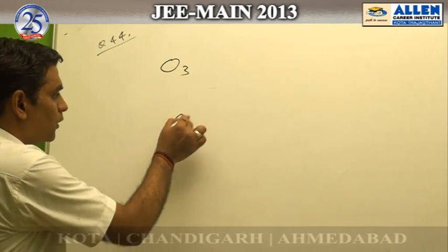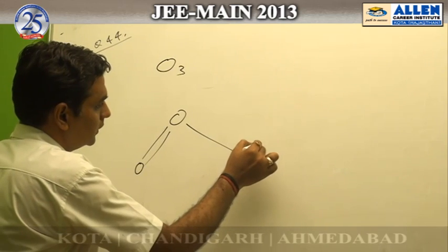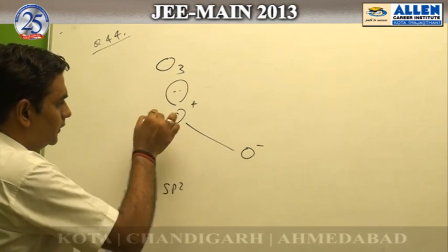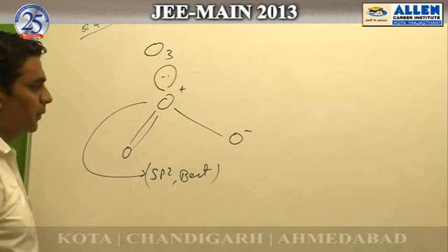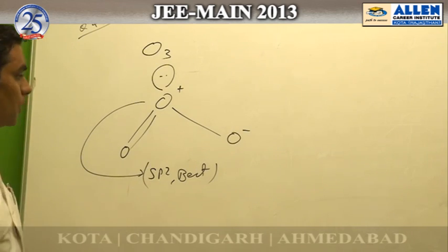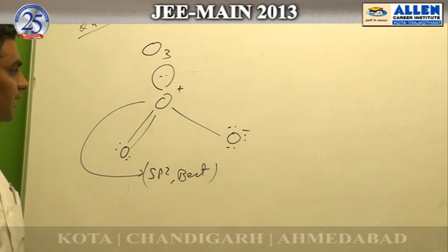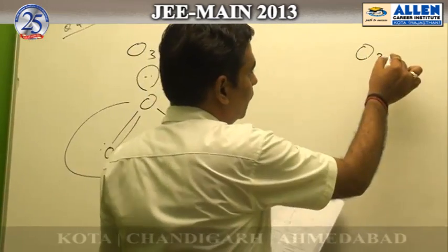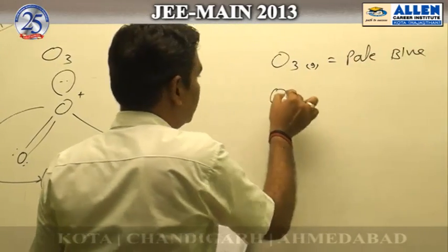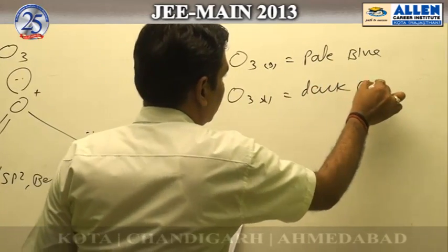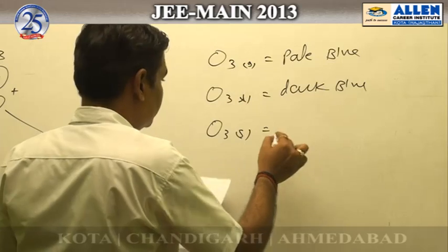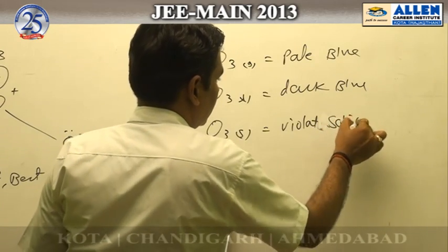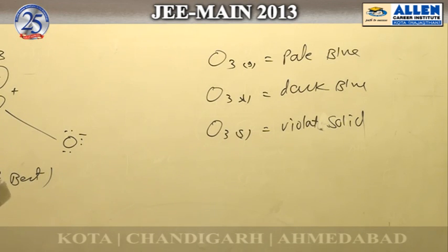Ozone, O₃, is a bent molecule. According to valence bond theory, O₃ is a bent-shape molecule because the central oxygen has one lone pair and two sigma bond pairs, making it sp2 hybridized. Ozone is a diamagnetic gas because all electrons are paired. O₃ in gas form exists as pale blue, and in liquid form exists as dark blue.